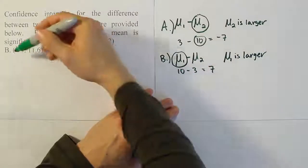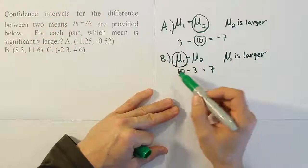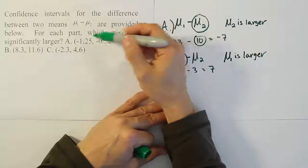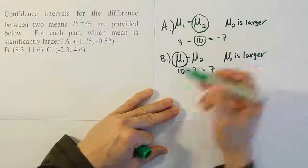Again, because the interval limits are both positive, we end up saying that the first mean is larger. In part A, the interval limits are both negative, so we say that the second mean is the one that's larger.